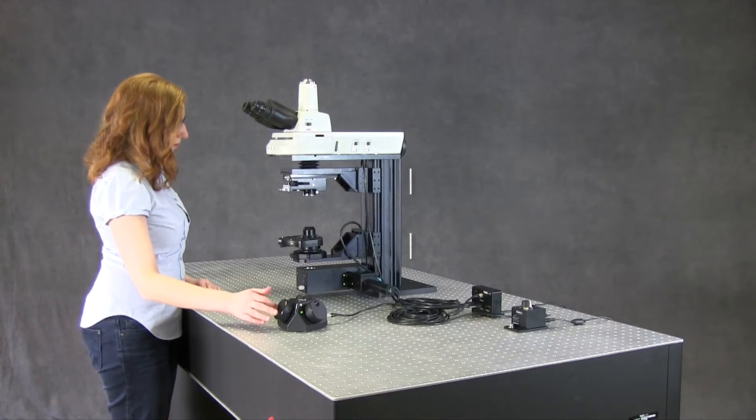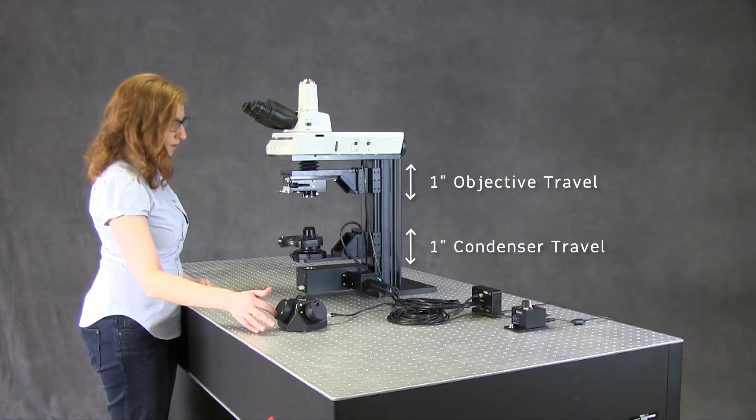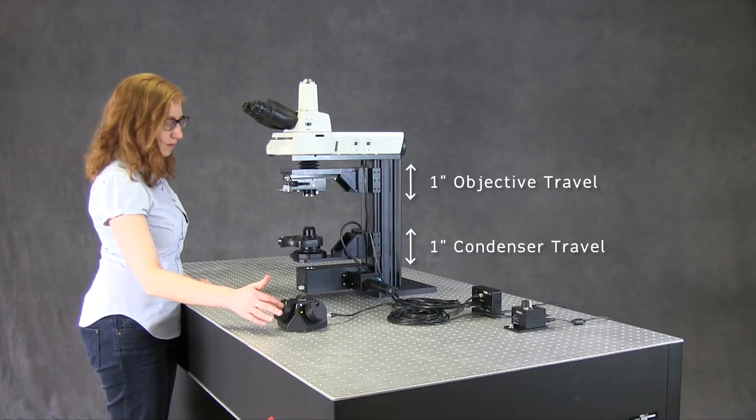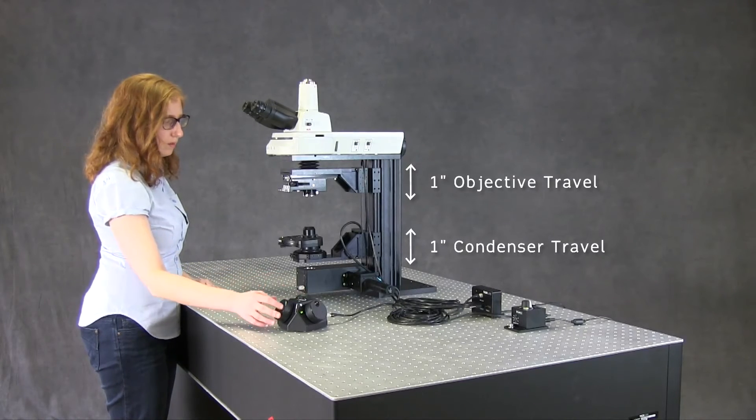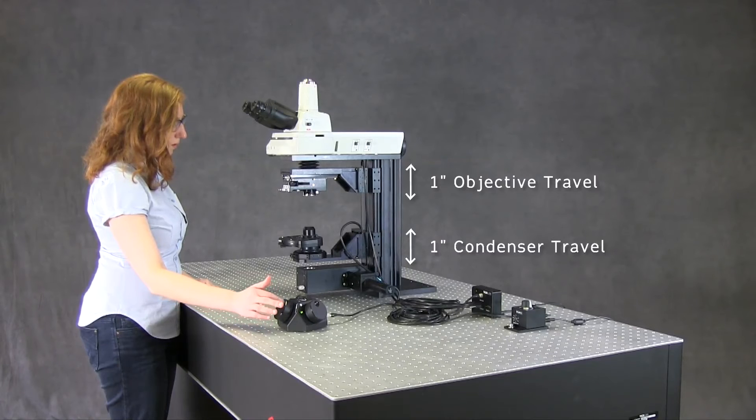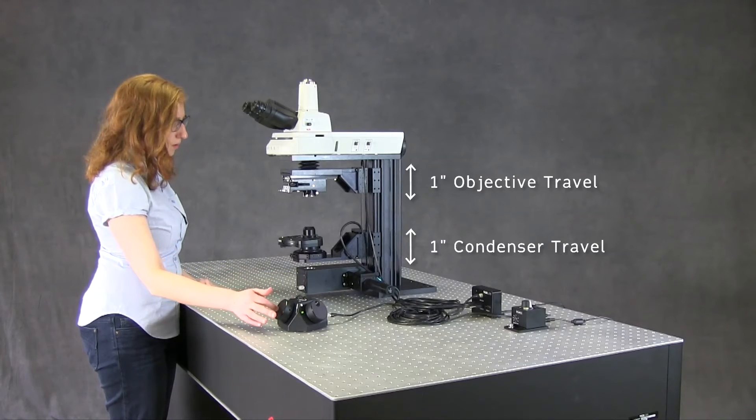The objective and condenser arms are each motorized with a 1 inch travel range. A knob on the top of the controller adjusts the speed of the translation from fast, coarse movements to micro-stepping for fine focusing adjustments.